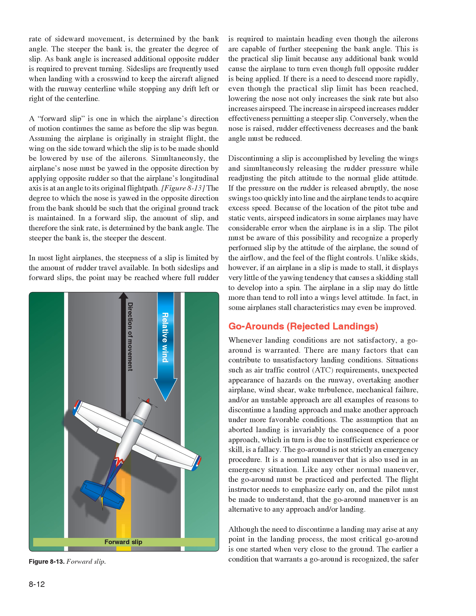If the pressure on the rudder is released abruptly, the nose swings too quickly into line and the airplane tends to acquire excess speed. Because of the location of the pitot tube and static vents, airspeed indicators in some airplanes may have considerable error when the airplane is in a slip. The pilot must recognize a properly performed slip by the attitude of the airplane, the sound of the airflow, and the feel of the flight controls. Unlike skids, if an airplane in a slip is made to stall, it displays very little of the yawing tendency that causes a skidding stall to develop into a spin—the airplane may do little more than roll into a wings-level attitude.